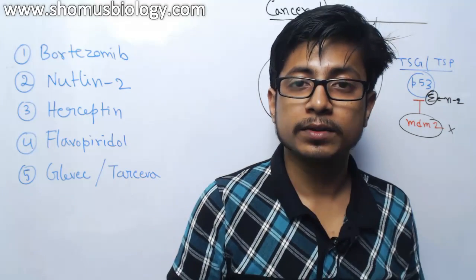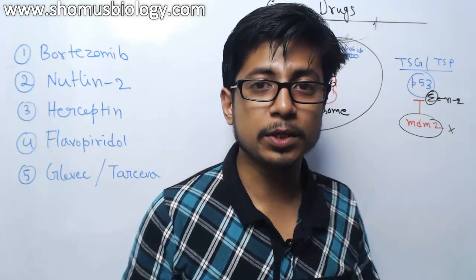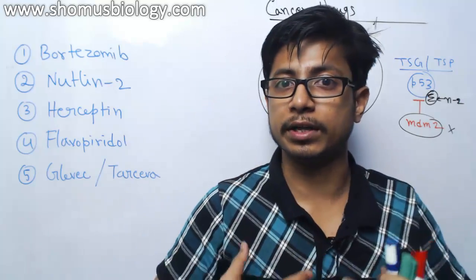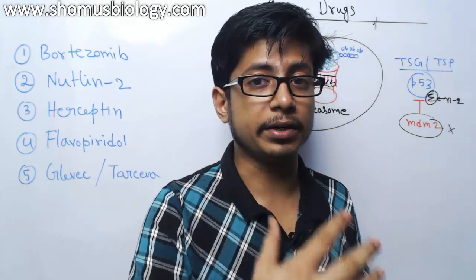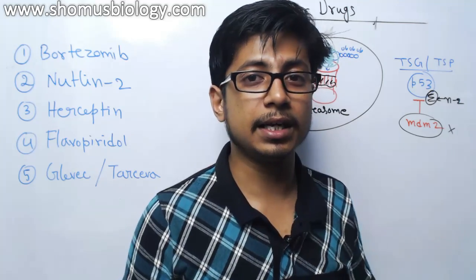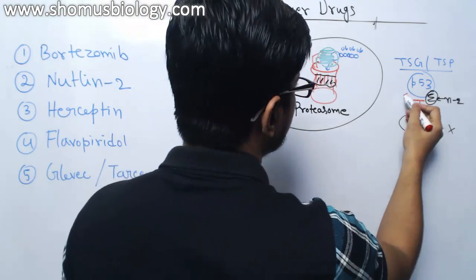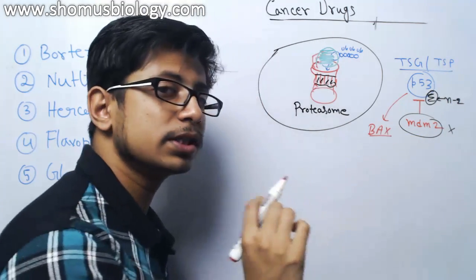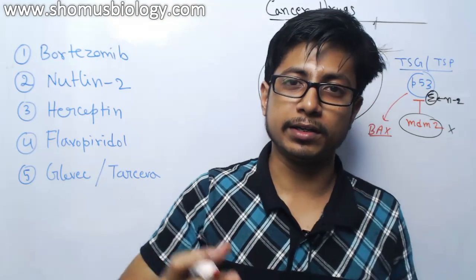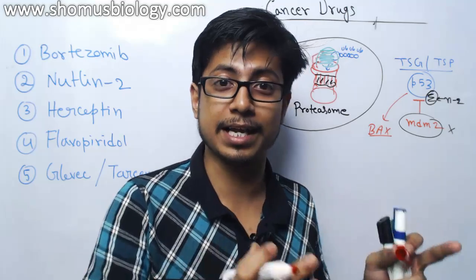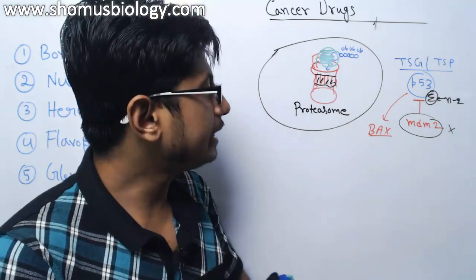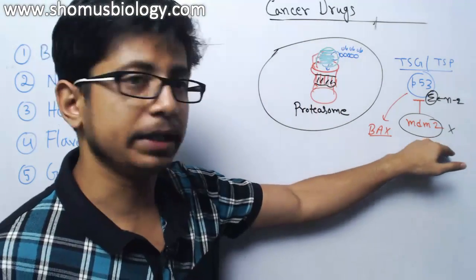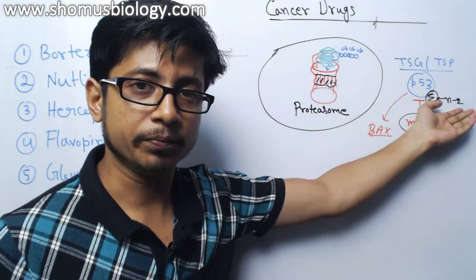As Nutlin-2 attaches to p53 at the MDM2 binding region, MDM2 is incapable of binding with p53, leaving p53 free. Free p53 can recruit DNA repair enzymes, and if repair fails, it signals the cell to kill itself by activating proteins such as Bax, which create pores in the mitochondrial membrane, triggering a cascade of reactions that kill the cell. The goal is to raise p53 concentration by preventing MDM2 interaction.